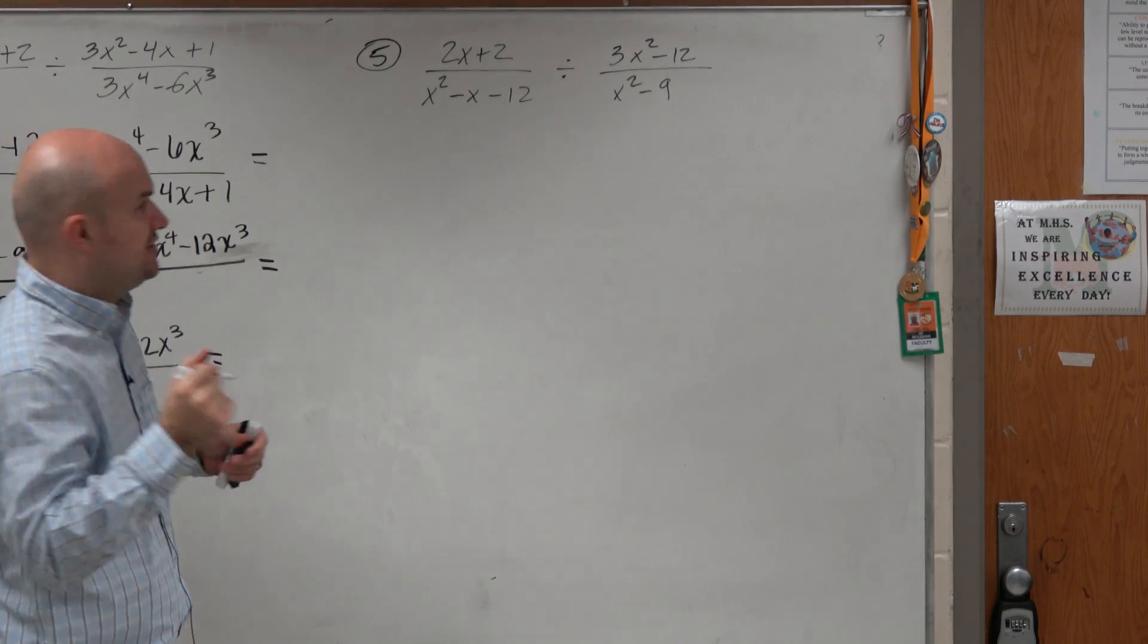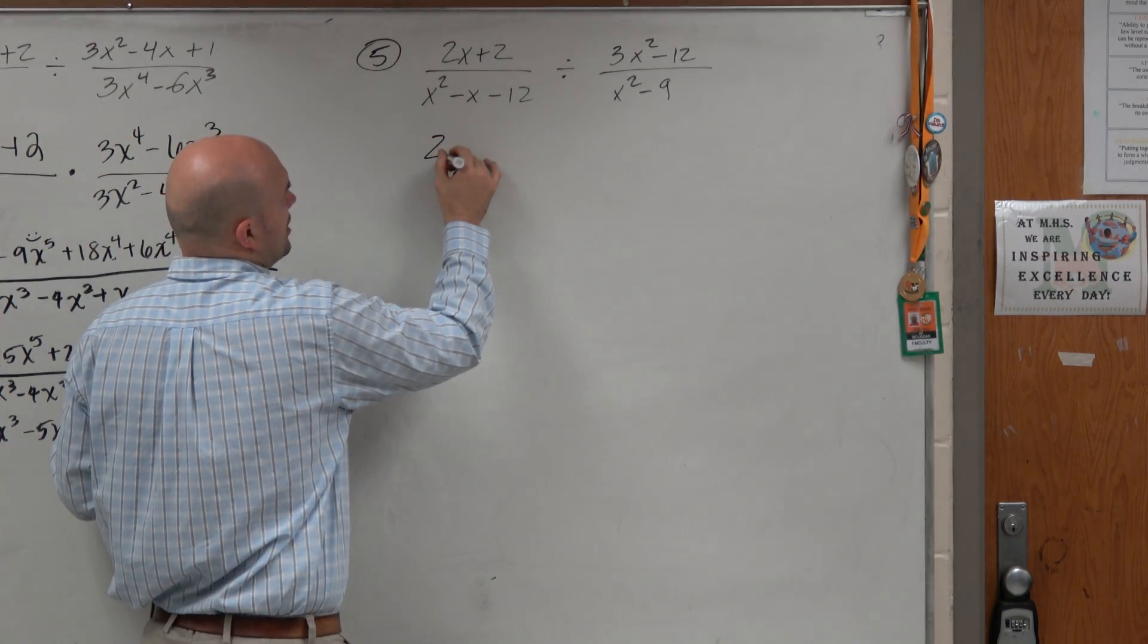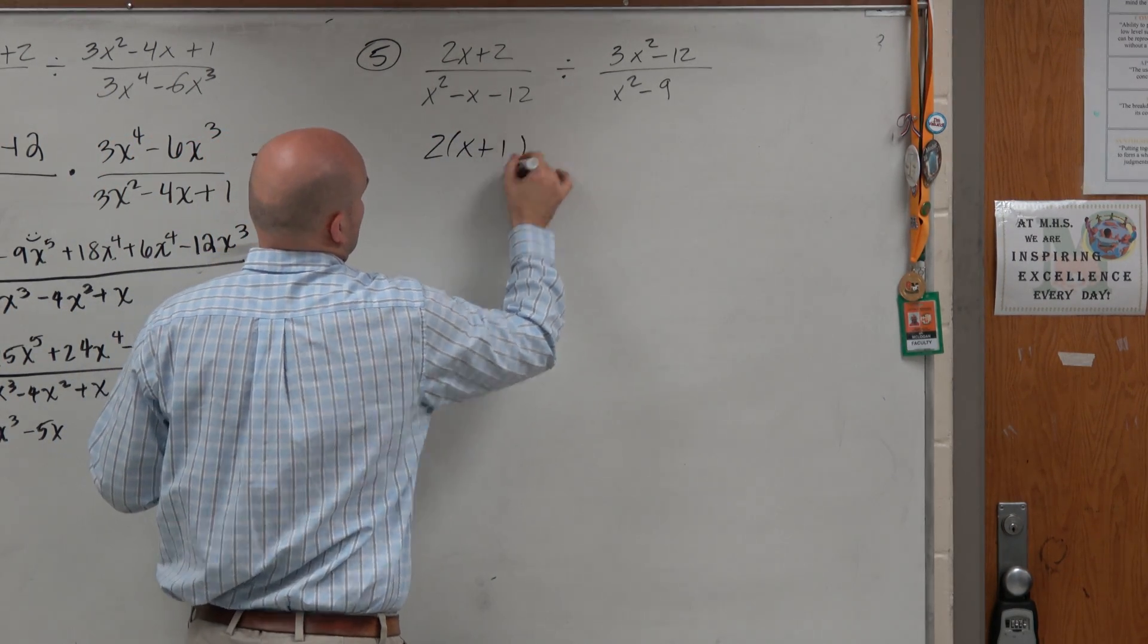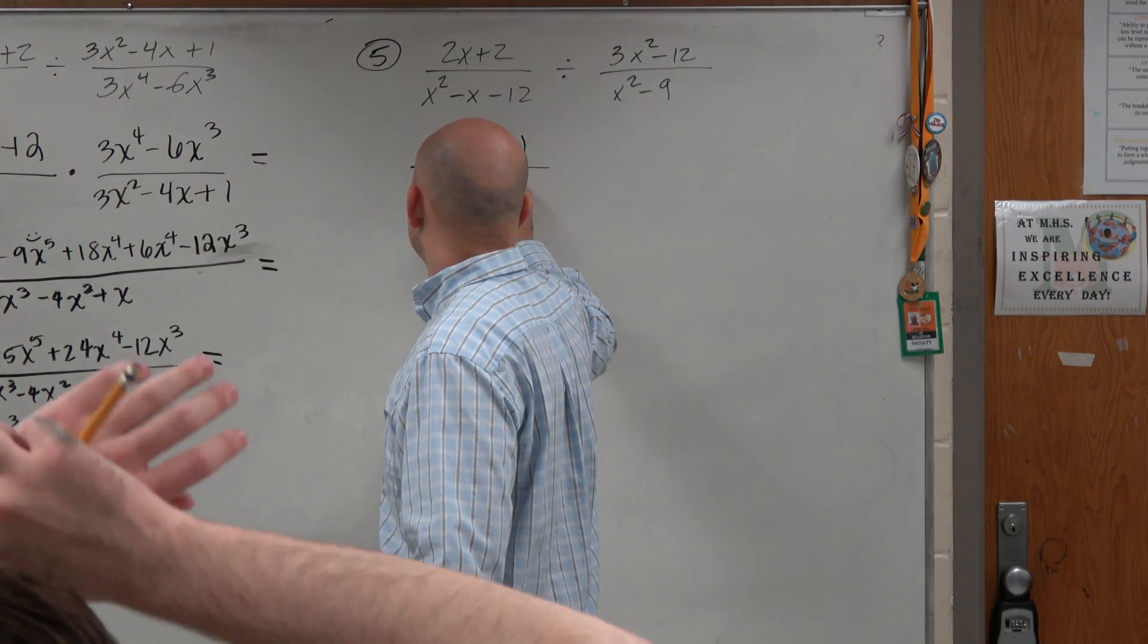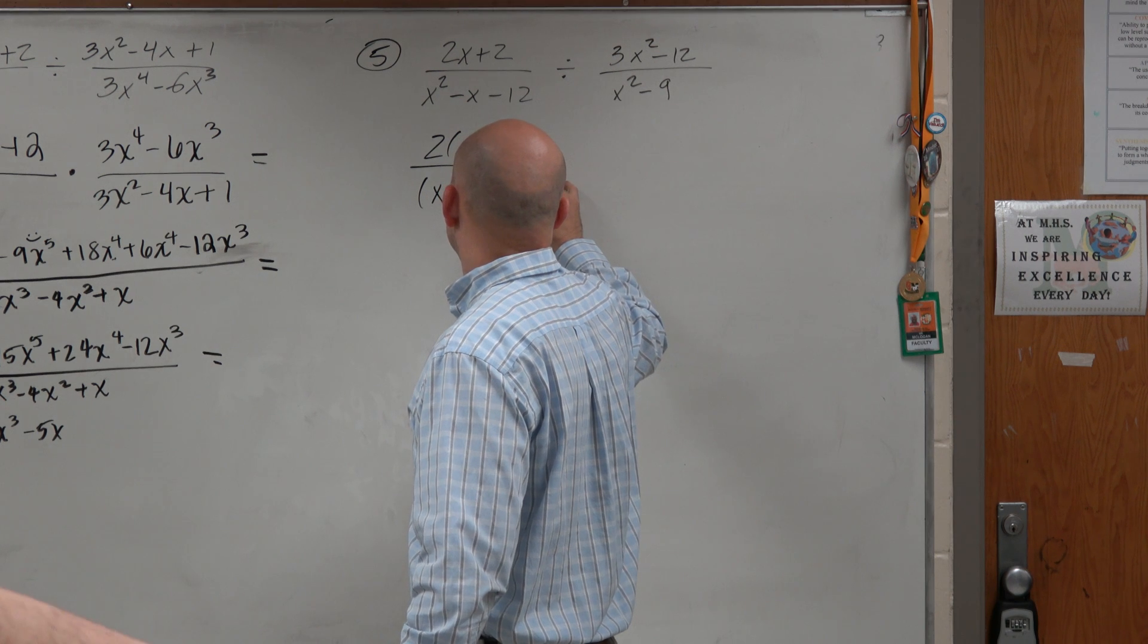But to save myself some steps, I am going to do some factoring here. So I'll factor out the 2. Over here, I can multiply this to an (x-4) times (x+3).